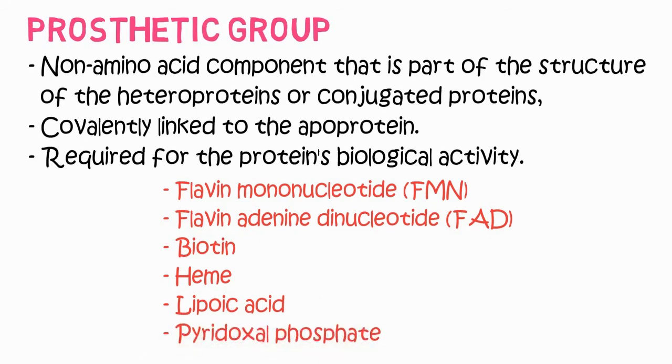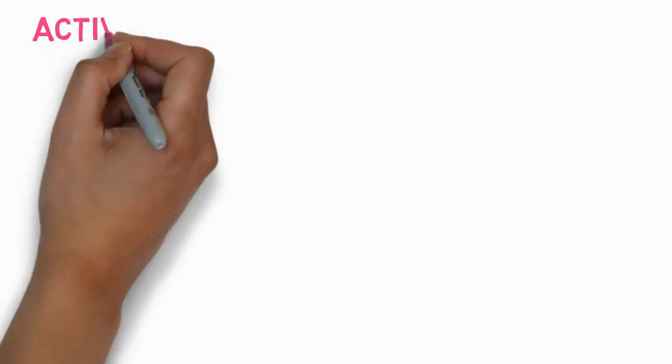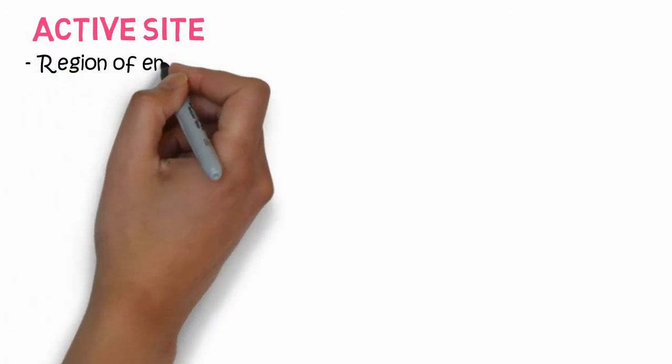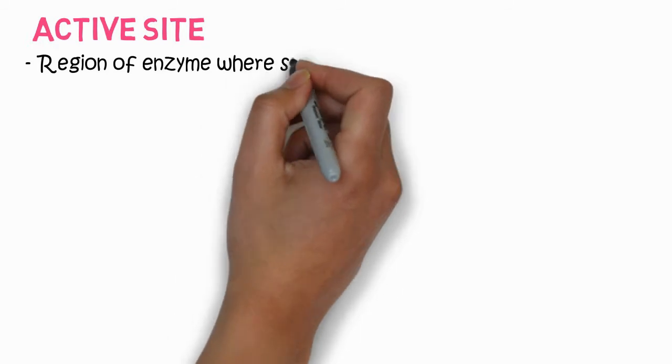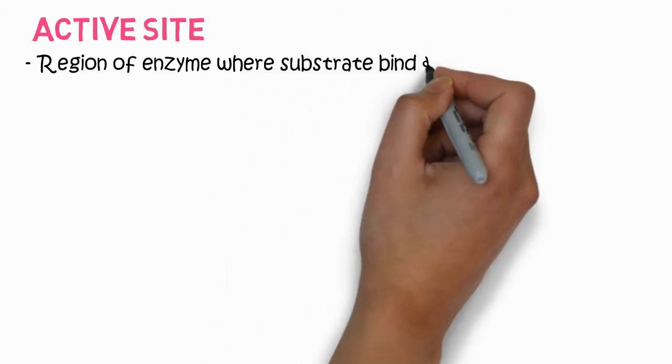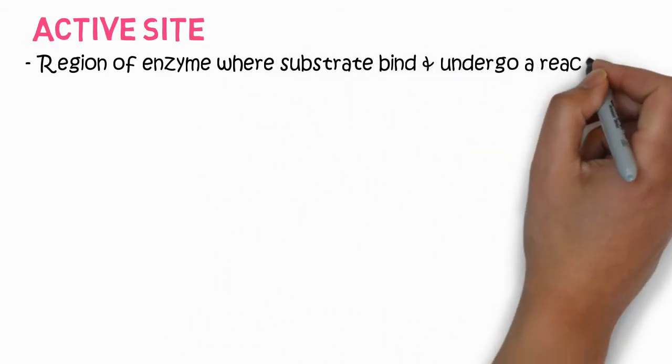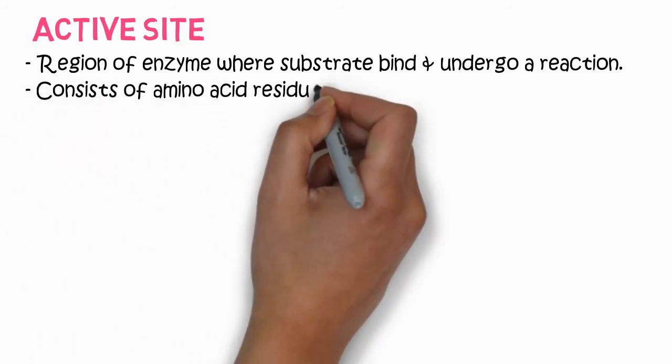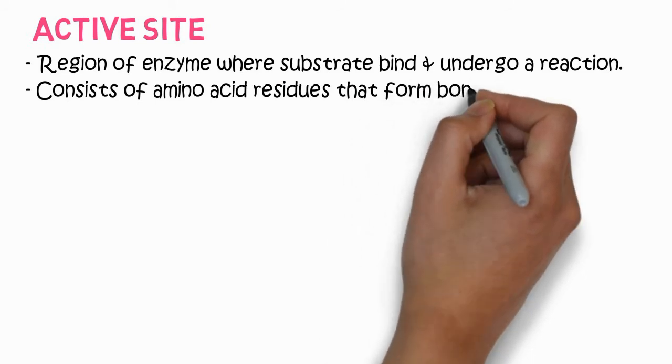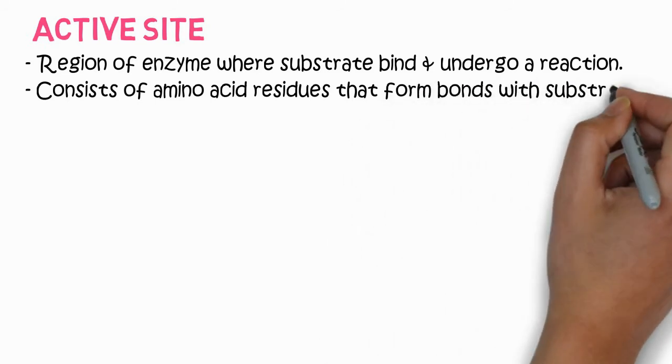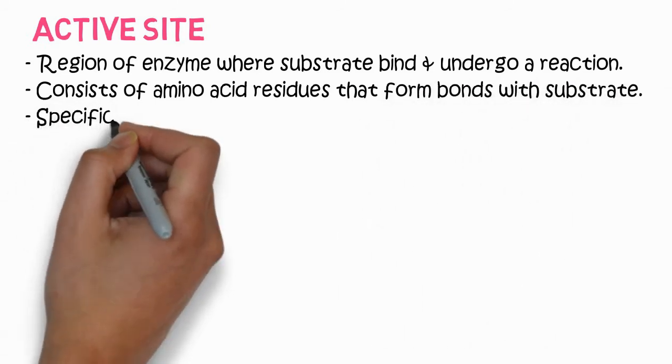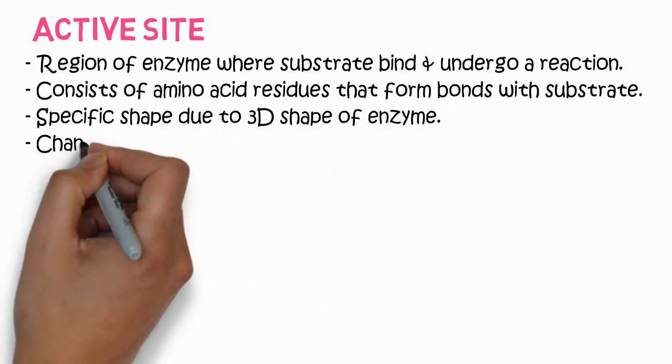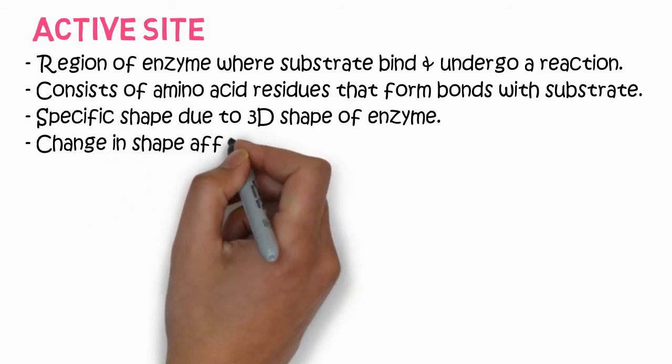Active site. The most important part of the enzyme is the active site. It is the region of the enzyme where substrate binds and undergoes a chemical reaction. It consists of amino acid residues that form bonds with substrate. They have specific shape due to the 3D shape of the enzyme.